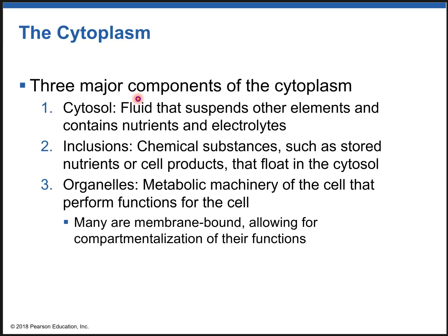Cytoplasm in general is everything inside the plasma membrane. There are three main components of the cytoplasm: first is the cytosol, which is the fluid-like, semi-liquid substance in which everything floats — nutrients, electrolytes, and everything else float in the cytoplasm. Then you have inclusion bodies that store nutrients or cell products. Finally, there are cell organelles — the small units or structures in the cell that perform functions inside the cell; they are the metabolic machinery of the cell.